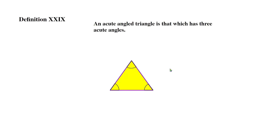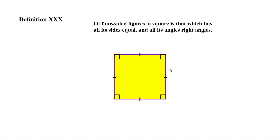Definition 29: an acute angled triangle is that which has three acute angles. So a triangle that has three acute angles is called an acute triangle. Remember, acute angles are angles that are less than 90 degrees.